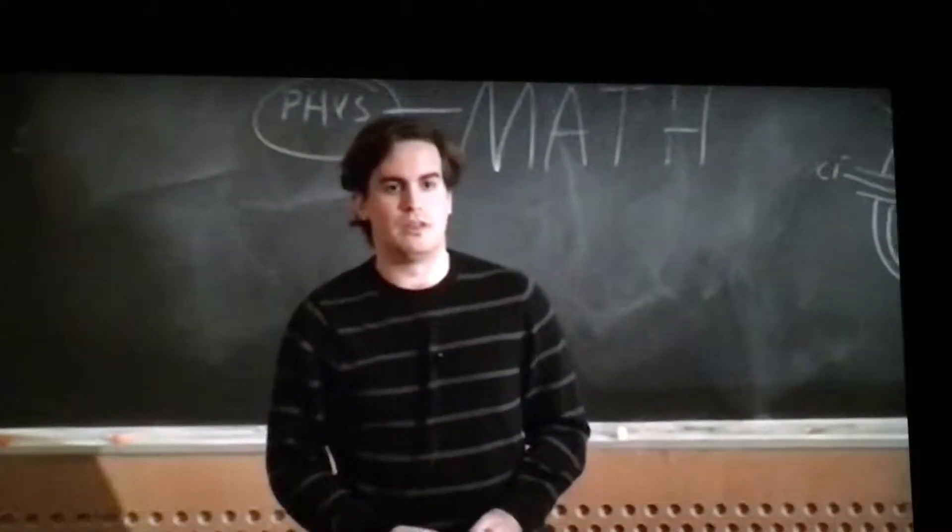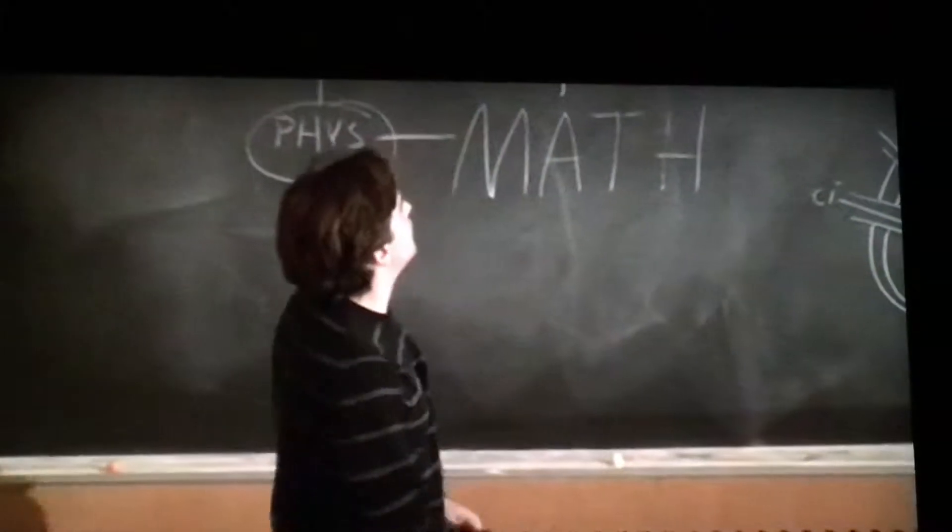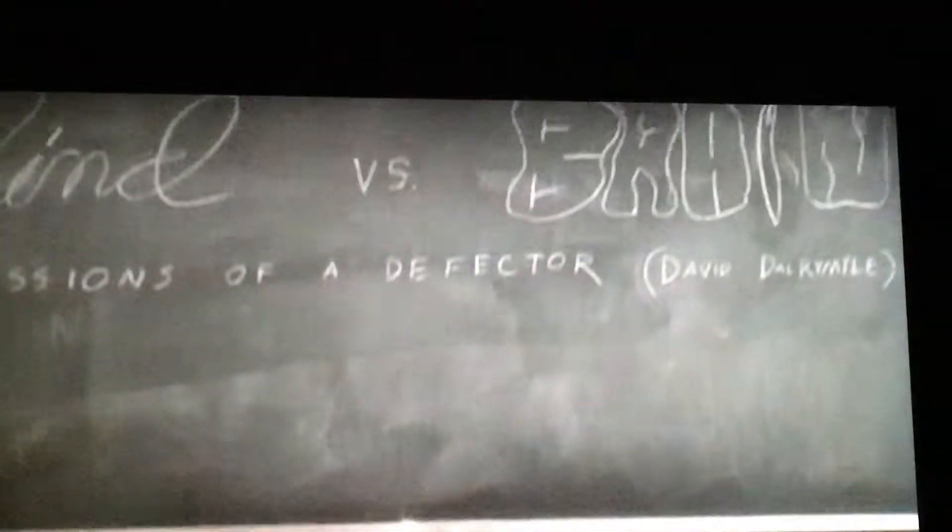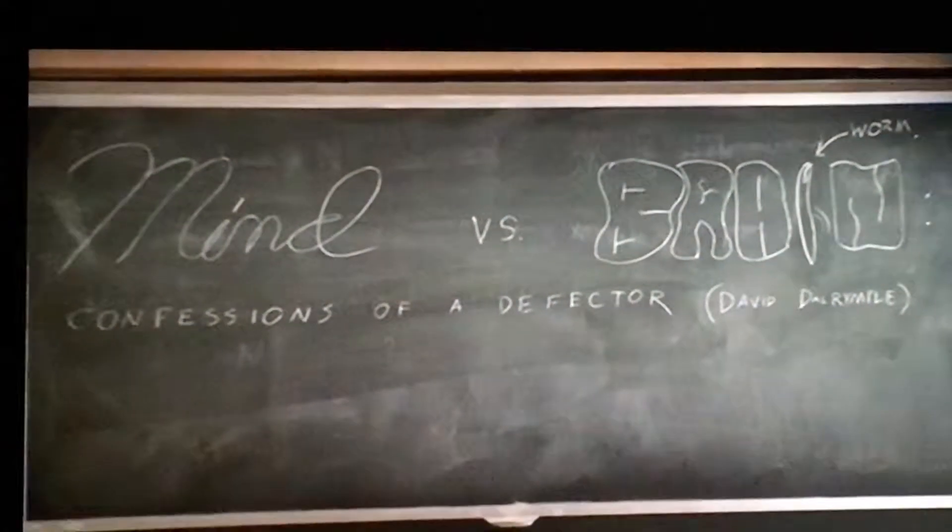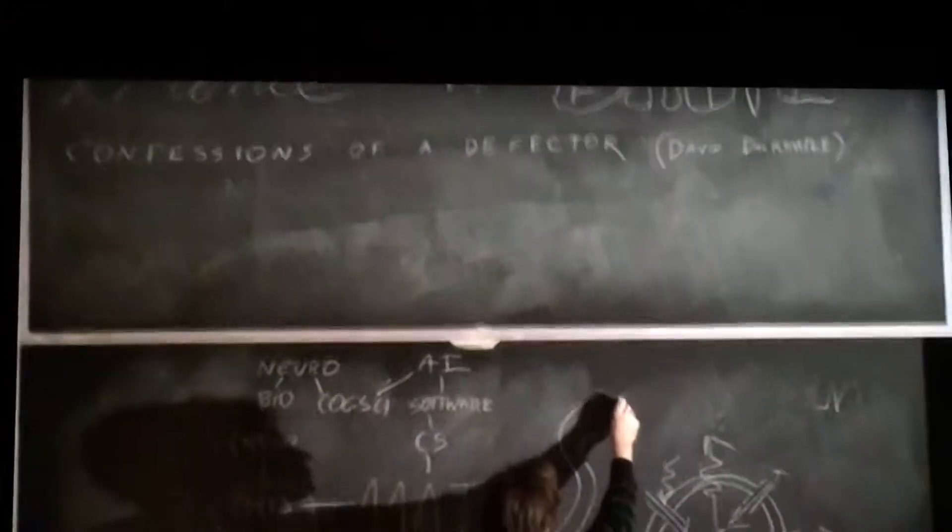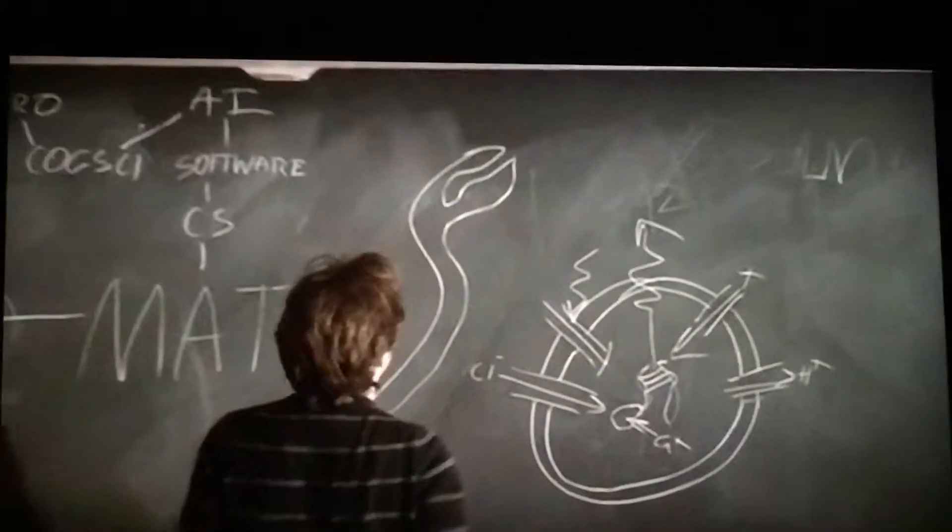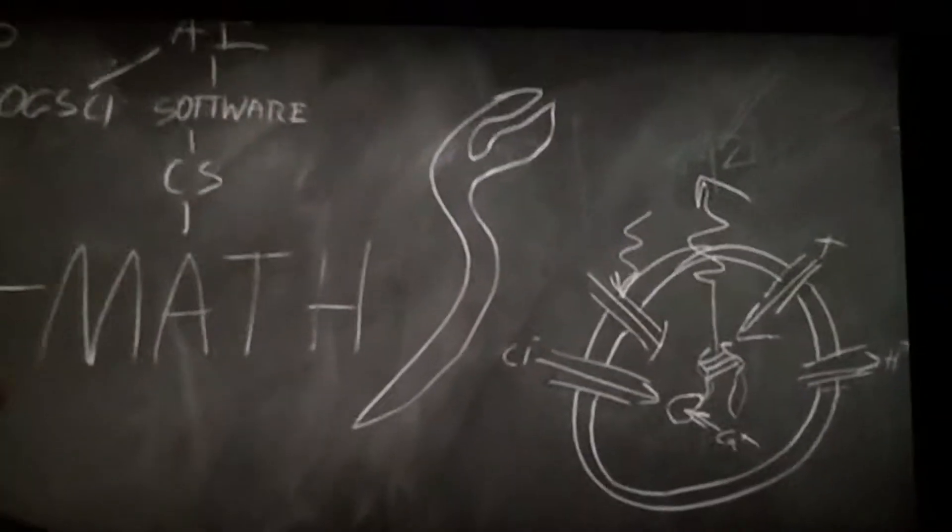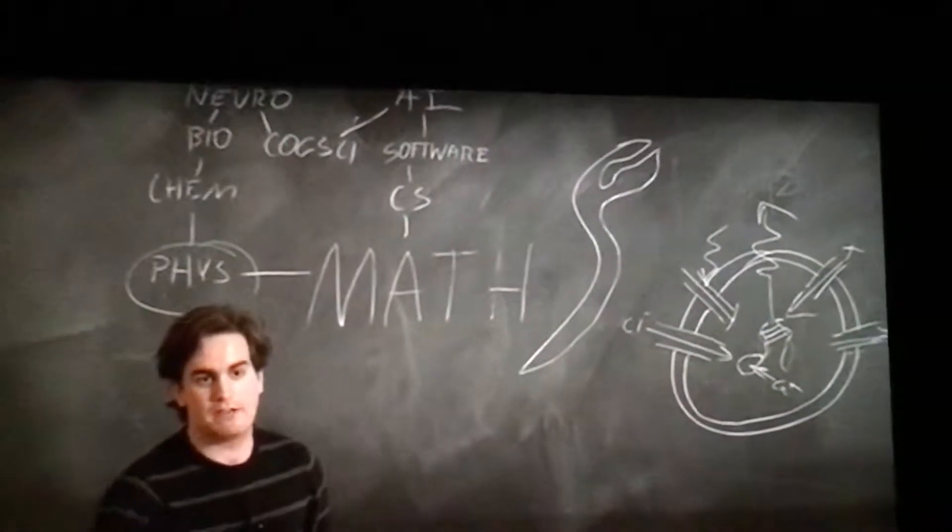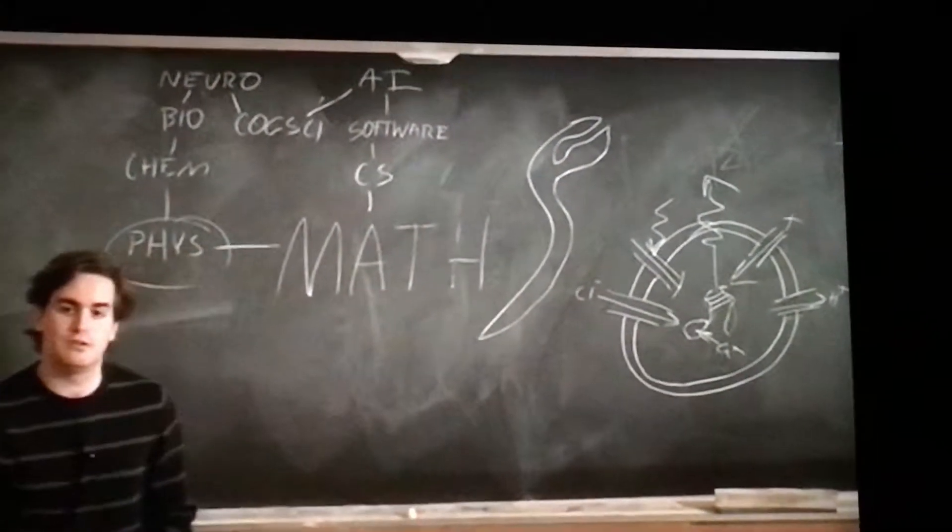In particular, I'm working on the worm C. elegans, a very well-studied organism. In fact, it's the only organism for which we know the complete connectome. It's sort of a dark secret of neuroscience that we already have the connectome for C. elegans and we can't do anything with it.